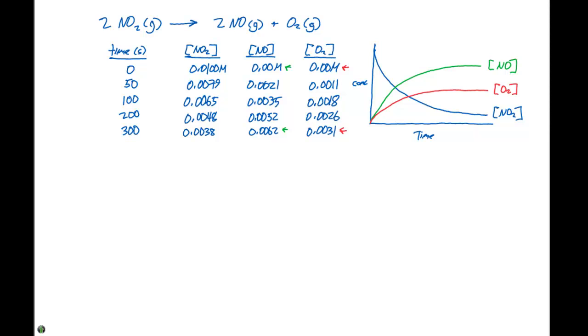So, when we kind of go and look at these together, we can look at what the average rate is. And the average rate is going to be the change in concentration per change in time. So, if we looked at the NO2, we're gonna start with 0.010 molar and go to 0.0079 molar, so these two data points right here.